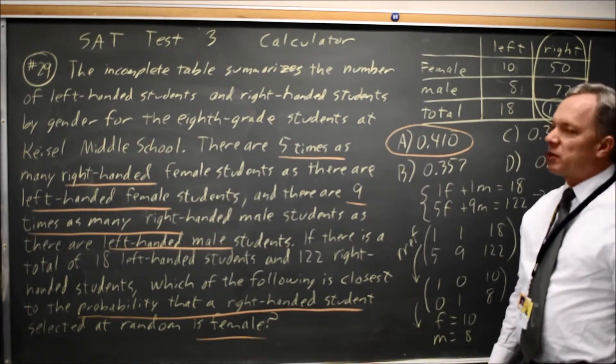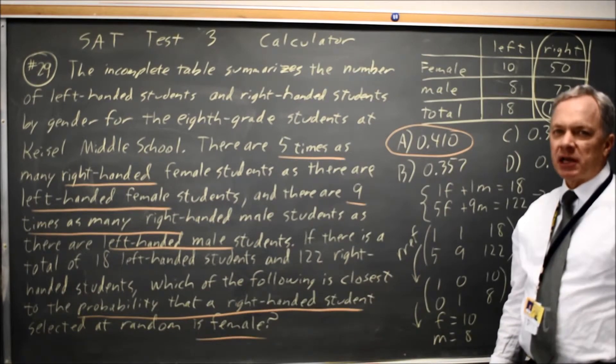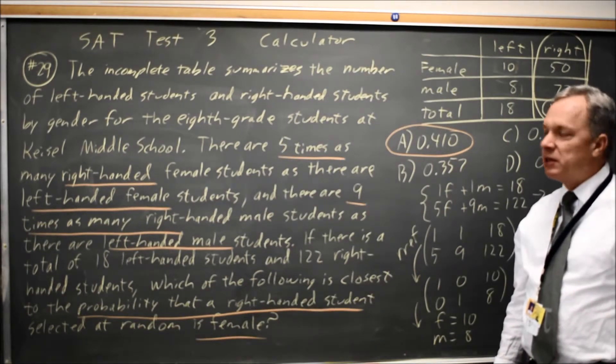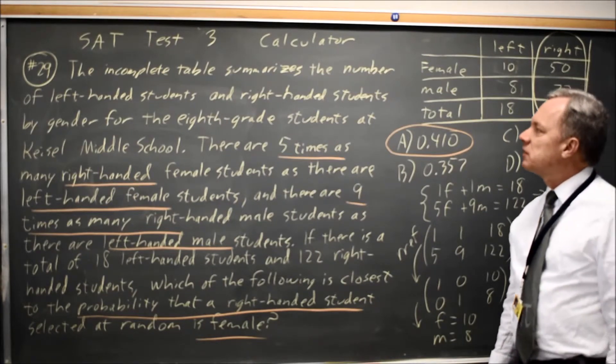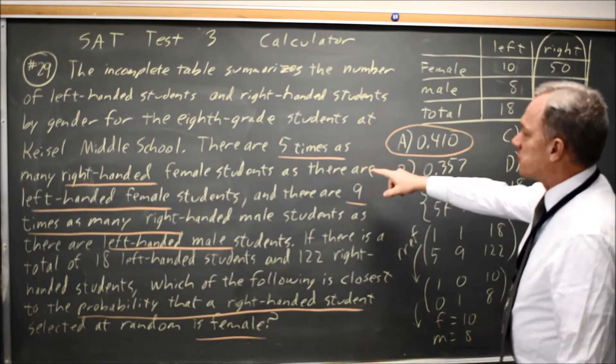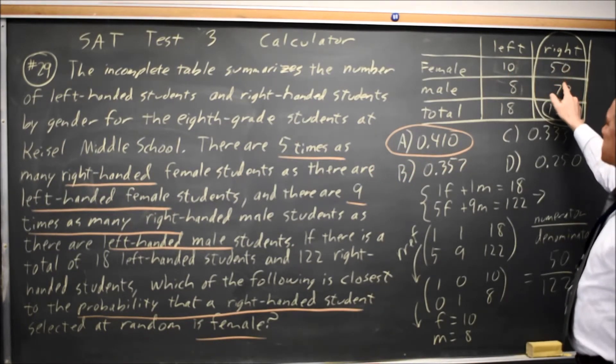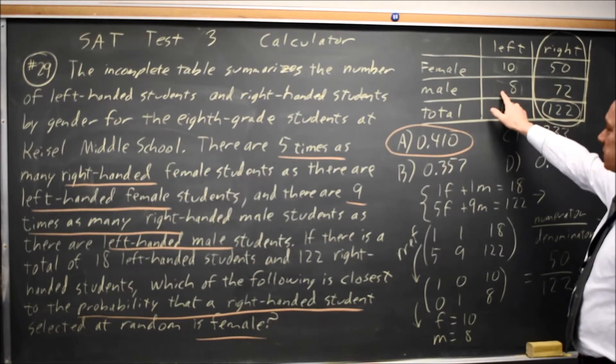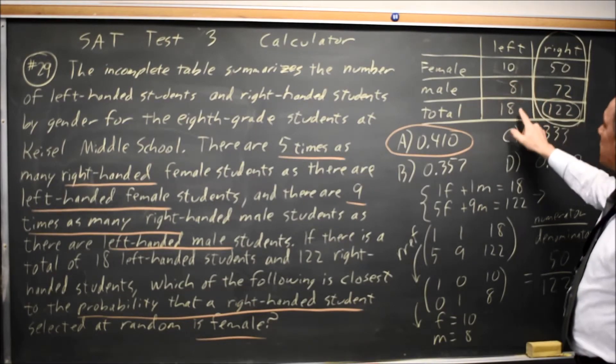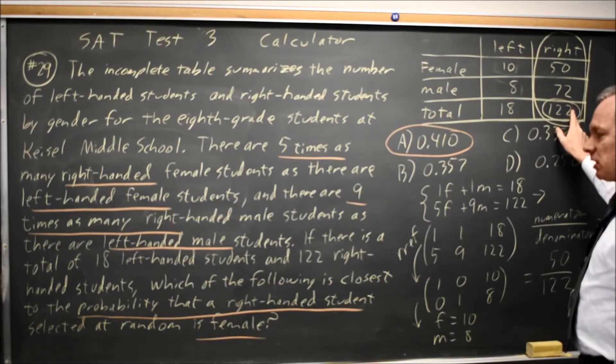Checking that I've done this problem correctly, because it's common to misread a problem and do the correct math for what you're hoping they're asking, but they may ask something different. I have a summary of left- and right-handed students. Five times as many right-handed females as left-handed females, I did that. Nine times as many right-handed males as left-handed males, I did that. A total of 18 left-handed students, a total of 122 right-handed students. I want the probability